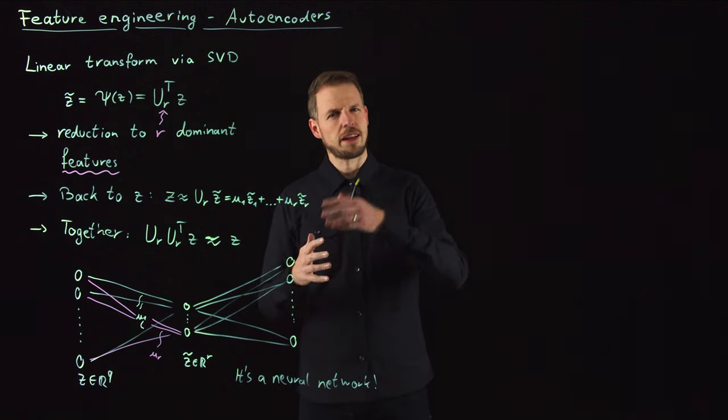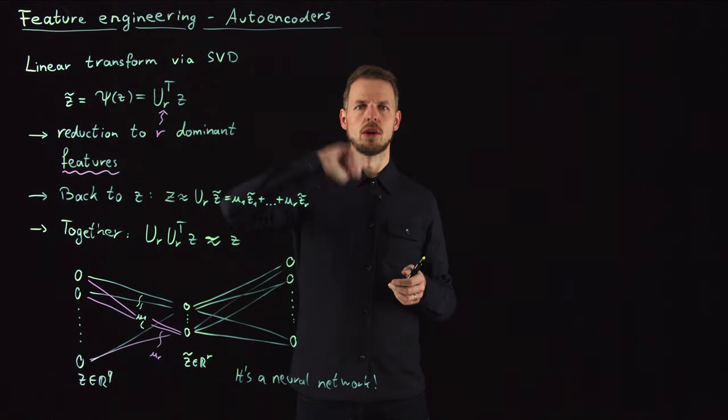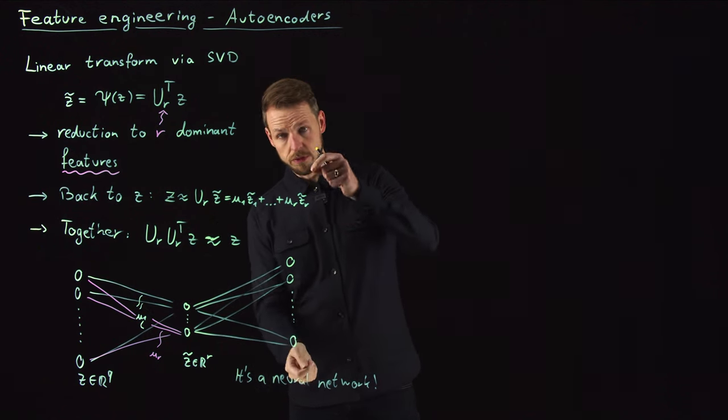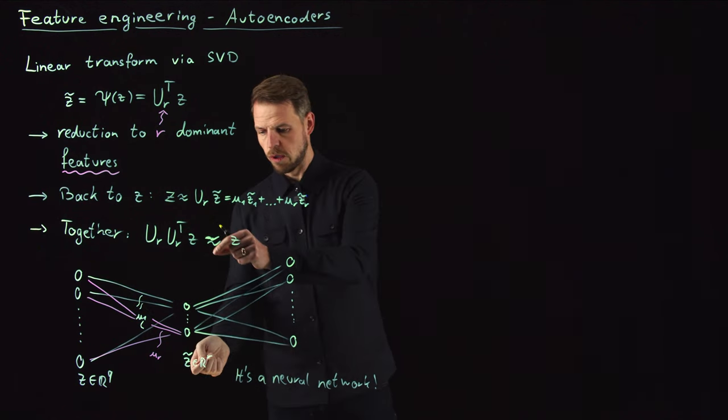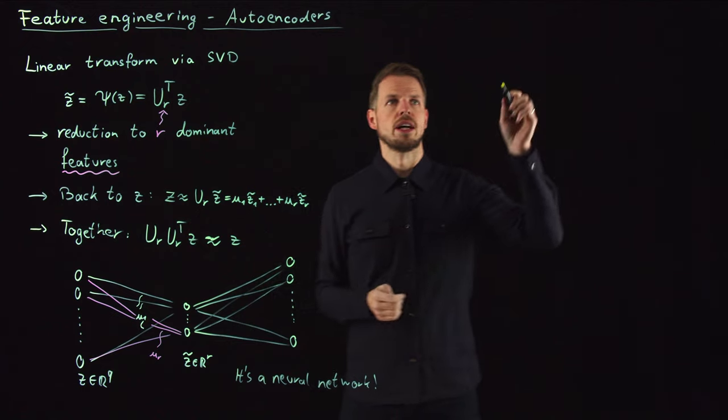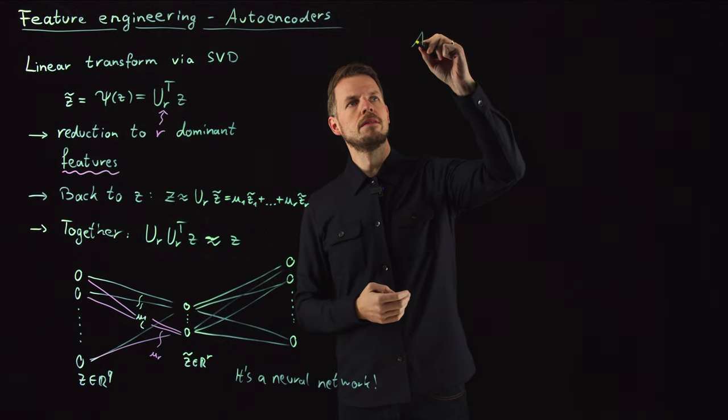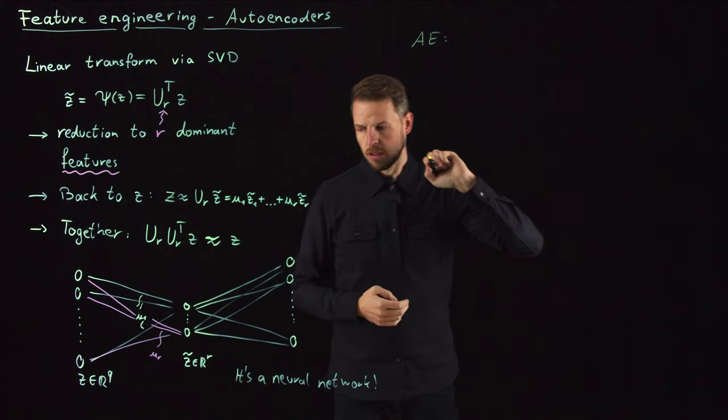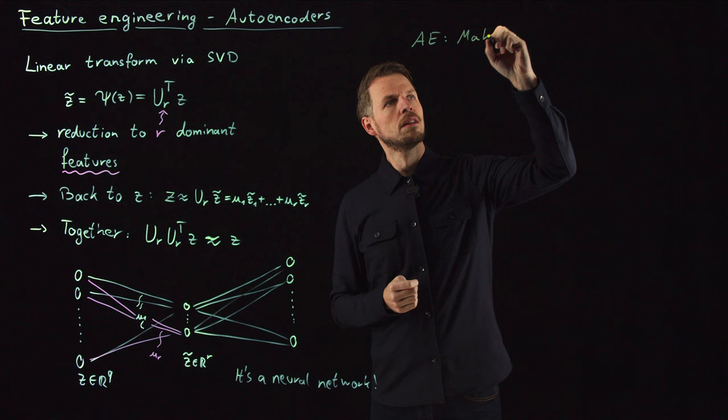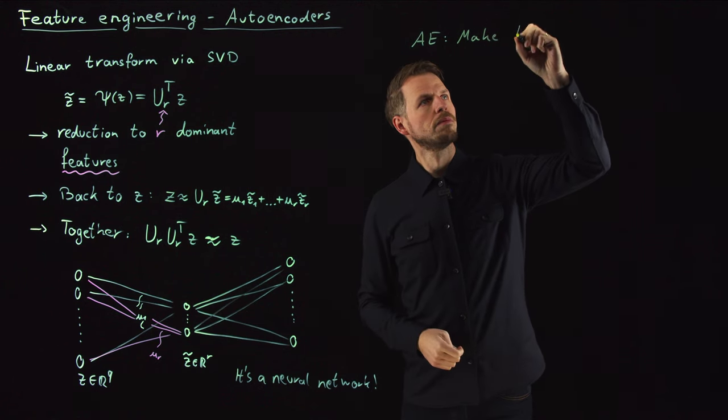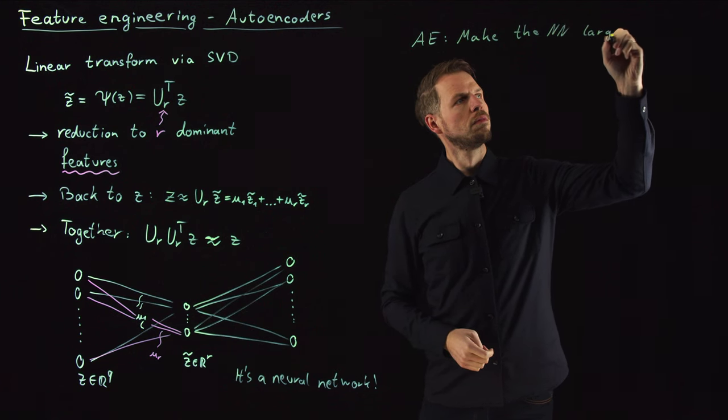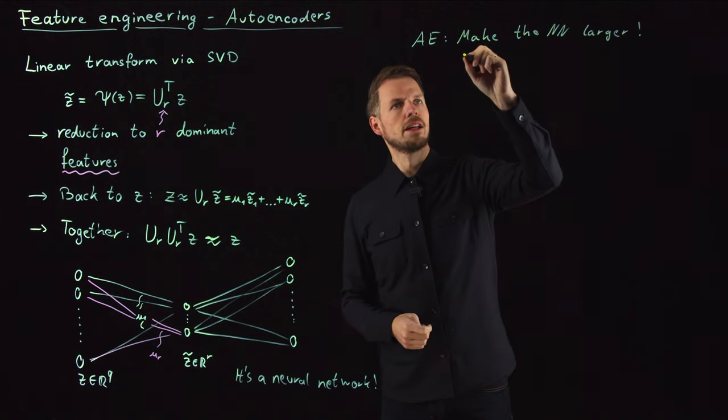But now we take the small step to get to the autoencoder. The idea is basically the same. We have a large input vector. We have the same output size. We have this intermediate layer that should be smaller because it should contain meaningful features. The autoencoder, or AE in short, just has a simple strategy: make the network larger and nonlinear.